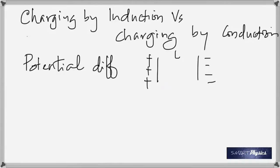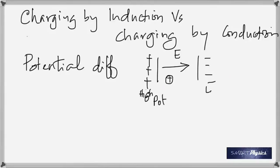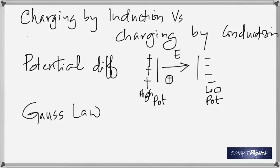Gauss's law: the electric flux Φ equals Q_enc/ε₀, where Φ is the number of electric field lines passing through an imaginary closed surface and Q is the charge enclosed by that imaginary surface — not just any charge. Be specific: it's the charge enclosed by the Gaussian surface.